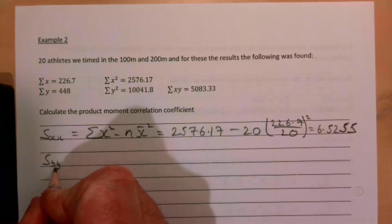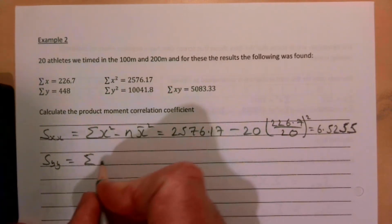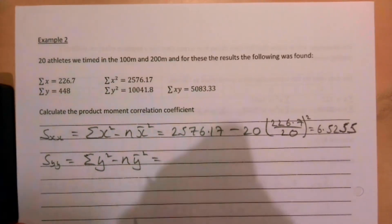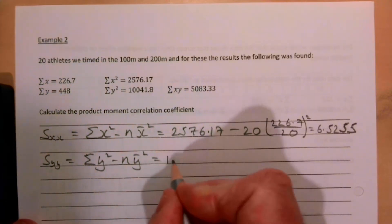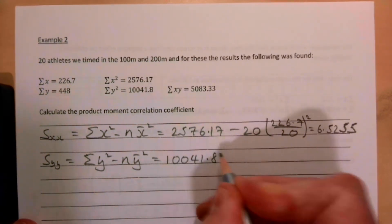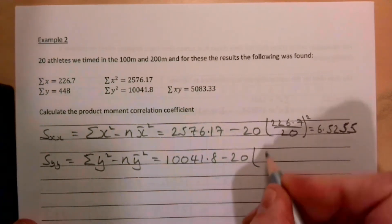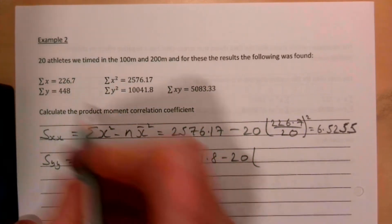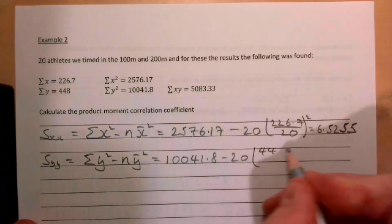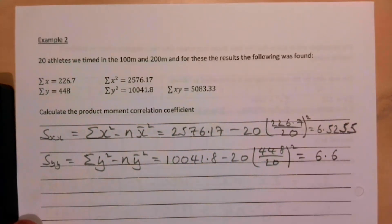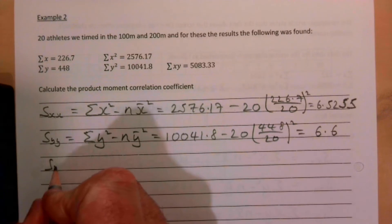Syy, the sum of all the y squareds take away n times the mean of y all squared. The sum of the y squareds is of course 10041.8 take away 20 times, how do you work out the mean of y? That's going to be 448 over 20 all squared.